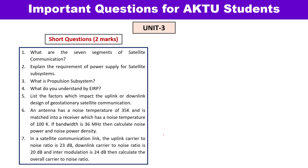Unit 3 is the longest unit because it has two parts: satellite subsystems and complete link design. The first part is completely theoretical, while the second part involves numericals and derivations. Short questions include: what are the seven segments of satellite communication, why is a power supply required, what is the propulsion system, what is effective isotropic radiated power, and what are the factors which impact the uplink and downlink design. Those factors are losses, carrier power, noise power, carrier-to-noise power ratio, and carrier-to-noise power spectral density ratio.